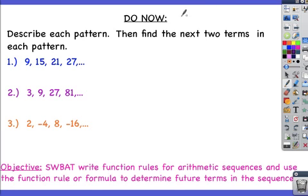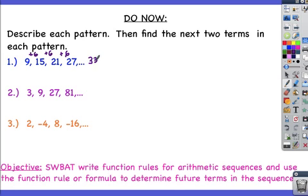Number 1: to get from 9 to 15, then 15 to 21, and 21 to 27, we're adding 6 each time. If we continue with this pattern, 27 plus 6 gives us 33, and 33 plus 6 gives us 39.